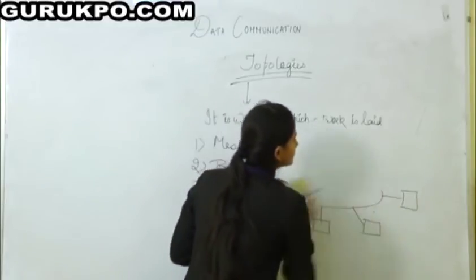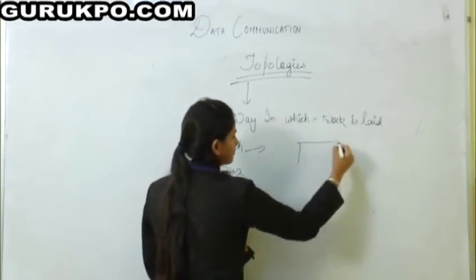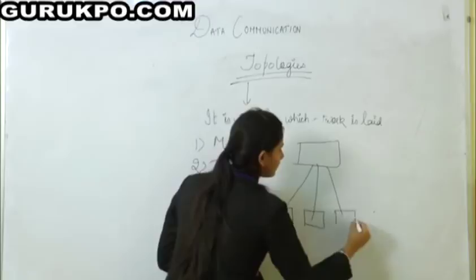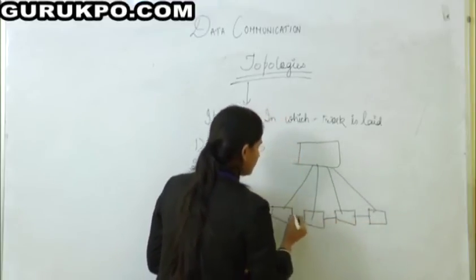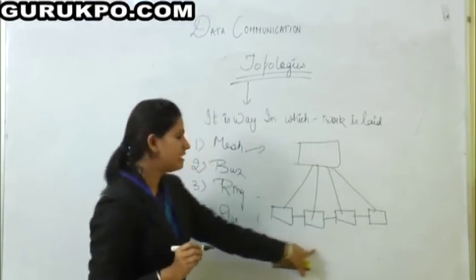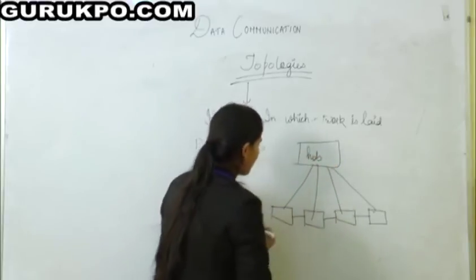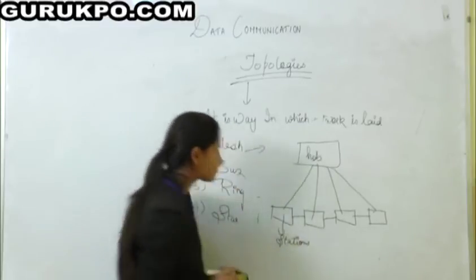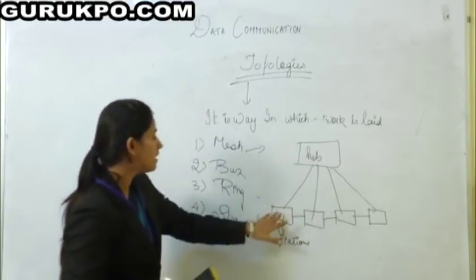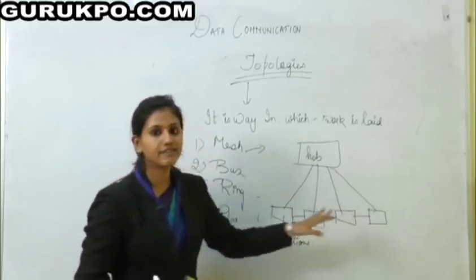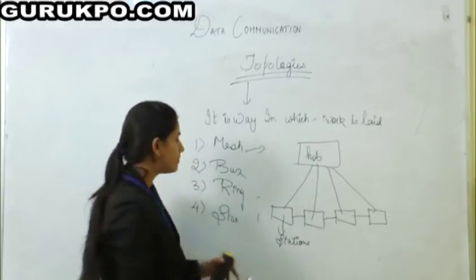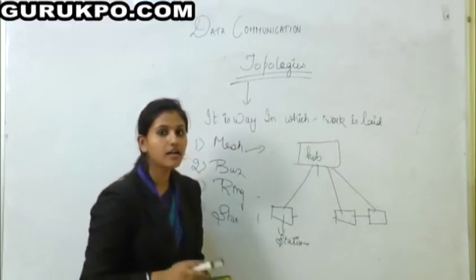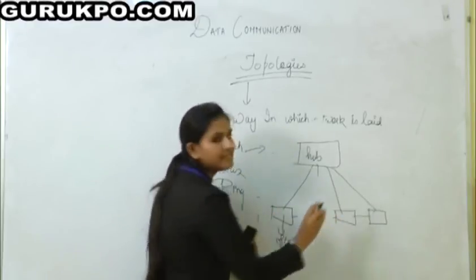Now, star topology. In star topology, there is a hub which is connected to the stations directly or indirectly. All stations are connected with each other and with the hub. Through the hub, information is transmitted from station to station. If a single station breaks or fails, the hub can still transmit data through other stations.